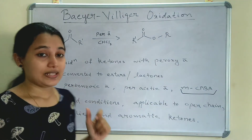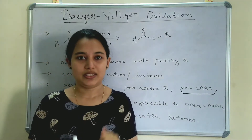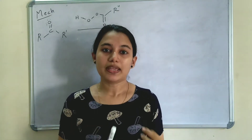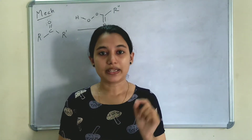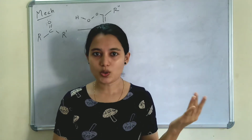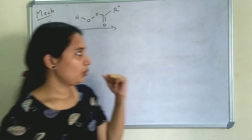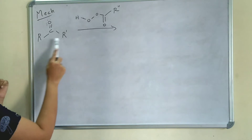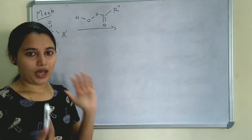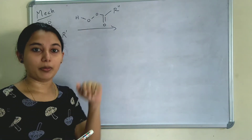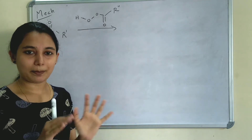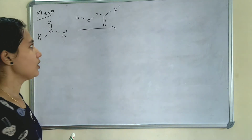Now we can see the mechanism of Baeyer-Villiger Oxidation. In Baeyer-Villiger Oxidation, the main step is the migration of a group from carbon in the carbonyl carbon to electron-deficient oxygen. The groups here are R and R'. Any of the R or R' can be migrated to the electron-deficient oxygen. That is the main step of Baeyer-Villiger Oxidation.